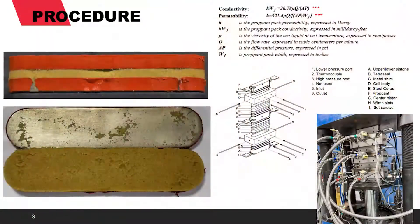To perform the test, the cell is loaded at 2 pounds per feet squared with proppant, and a 1,000 PSI closure stress is applied for 12 to 24 hours at 250 degrees Fahrenheit to allow the proppant sample bed to reach a semi-steady state condition.